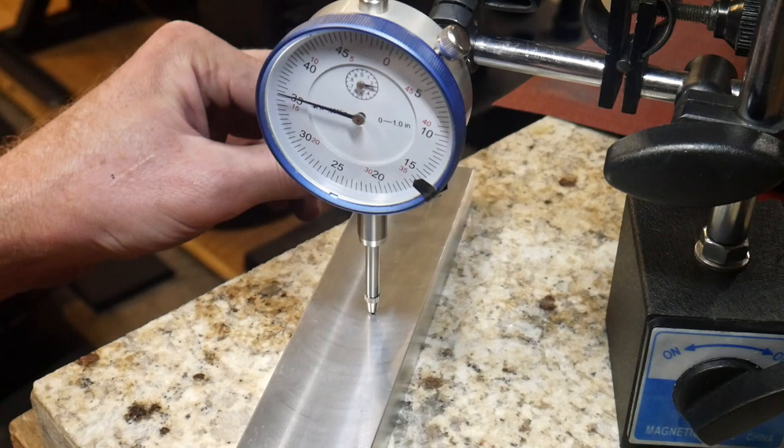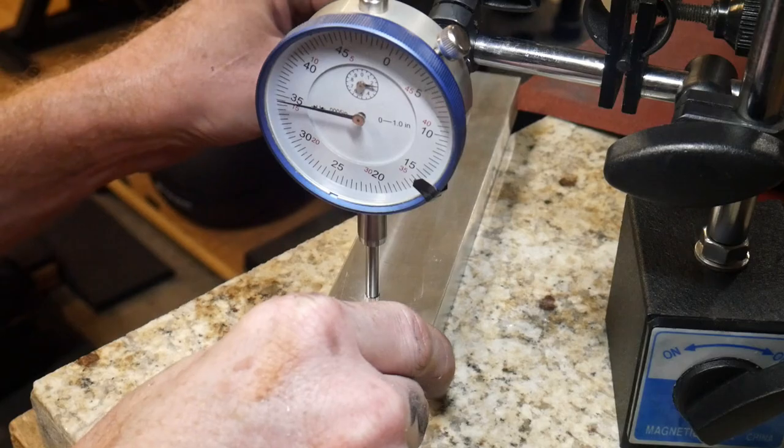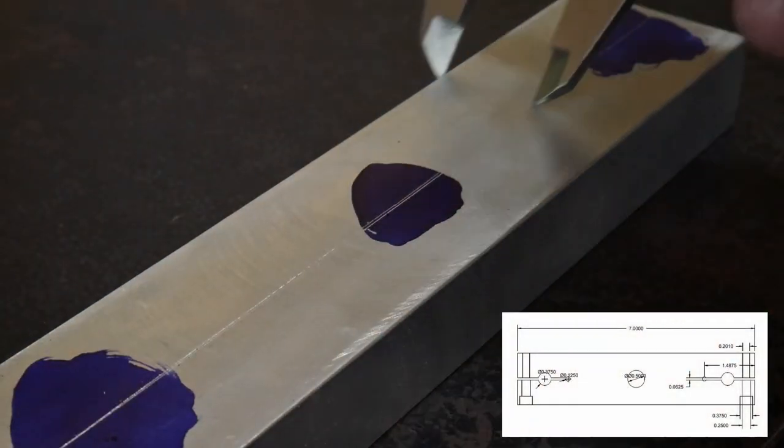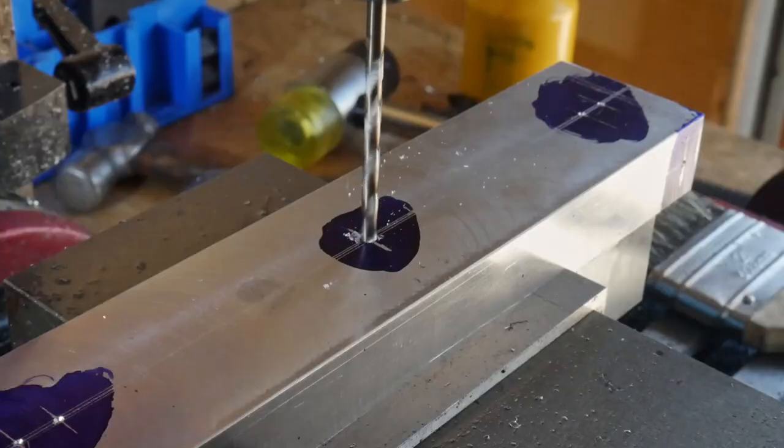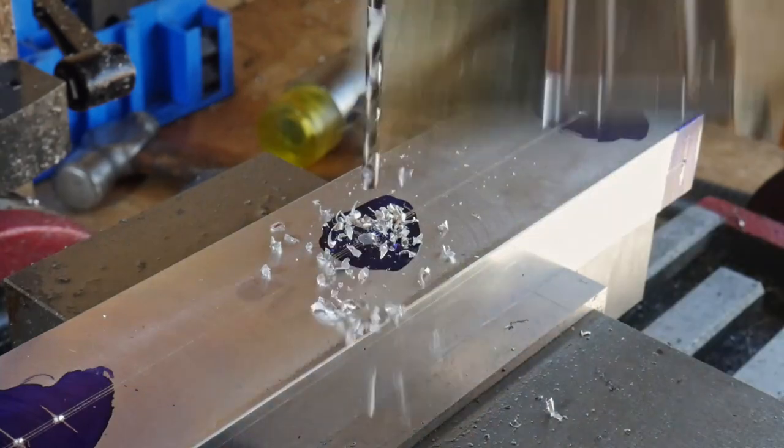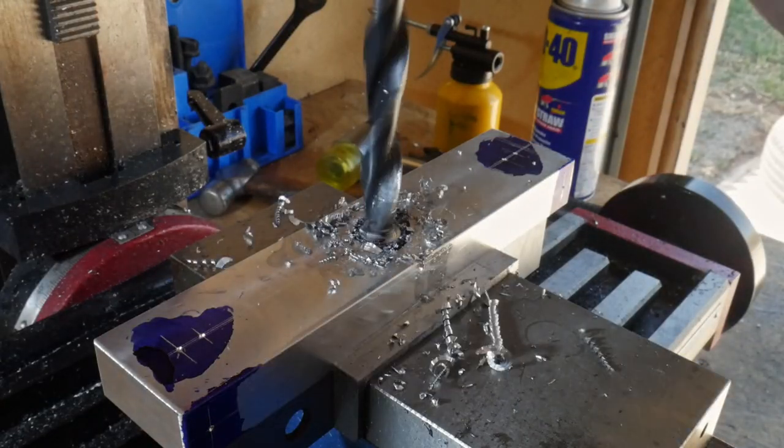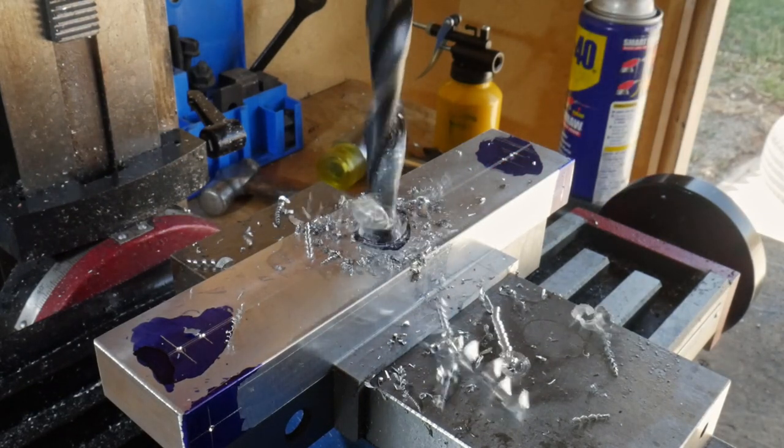The next step will be to drill some holes in this block: two holes to accept the dial indicators and one center hole to accept an arbor that will be going into the mill. I will venture to note here that a more accurate way to locate these holes would be to use an edge finder and the dials on your mill, however I do not feel like this piece merits that level of precision.